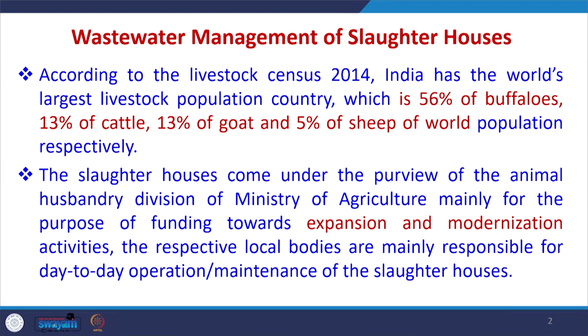According to the livestock census 2014, India has the world's largest livestock population, with more than 50 percent of the world's buffaloes, 13 percent of the goats, and 5 percent of the sheep actually in India. The slaughterhouses come under the purview of the animal husbandry division of the Ministry of Agriculture mainly for funding towards expansion and modernization, while respective local bodies are responsible for day-to-day operation and maintenance.